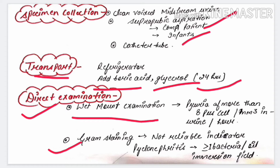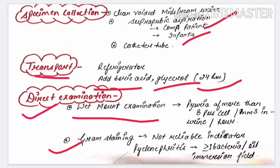In wet mount examination, it is done to demonstrate pus cells in the urine. Pyuria of more than 8 pus cells per mm³ is taken as significant. Gram staining is not a reliable indicator in UTI because bacterial count in the urine is very low, and it is limited to pyelonephritis cases. The leukocyte esterase test is a cheaper method that detects leukocyte esterase secreted by pus cells present in the urine.